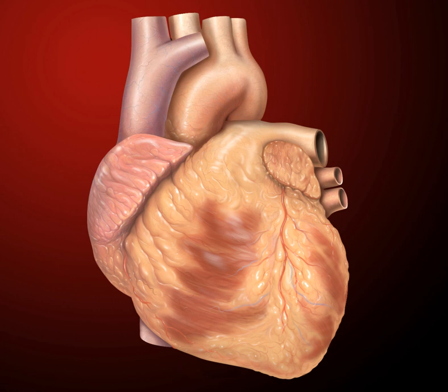The right heart consists of two chambers, the right atrium and the right ventricle, separated by the tricuspid valve. The right atrium receives blood almost continuously from the body's two major veins, the superior and inferior venae cavae. A small amount of blood from the coronary circulation also drains into the right atrium via the coronary sinus, which is immediately above and to the middle of the opening of the inferior vena cava.